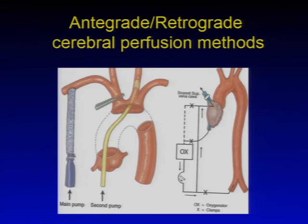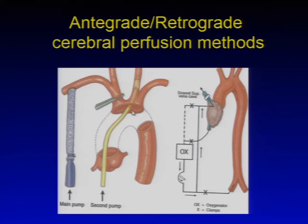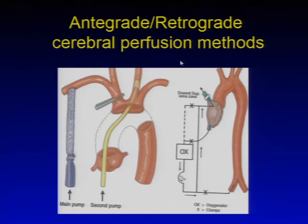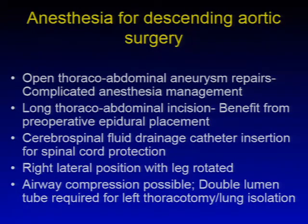If surgery requires DHCA for more than 30 minutes, antegrade cerebral perfusion is used. A perfusion cannula in the subclavian or axillary artery perfuses the brain through the internal carotid artery, with clamping of the innominate vessel to prevent surgical field contamination. Individual left carotid artery perfusion may be needed in patients with an incomplete circle of Willis. Retrograde perfusion via the SVC cannula delivers blood to the brain in a retrograde fashion. Antegrade perfusion has been shown to improve outcomes in prolonged DHCA.